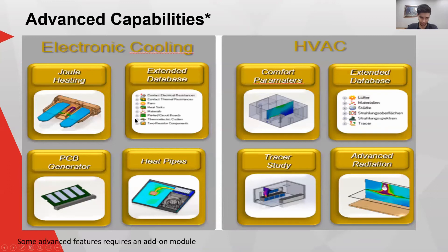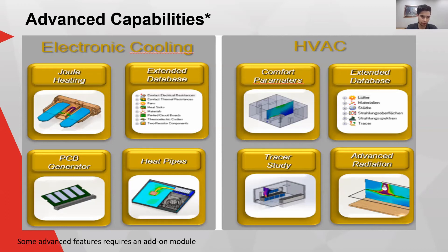On top of the base flow simulation — available on all university SOLIDWORKS licenses — you also get access to the Electronic Cooling module, which adds several additional features specifically for electronics cooling. It includes a database of fans, heat sinks, and heating materials. It can take a base geometry, take the PCB, and give you specific thermal properties for multi-layer PCBs so you don't have to calculate or guess. Heat pipes are also included.